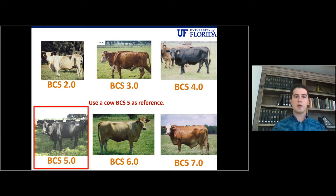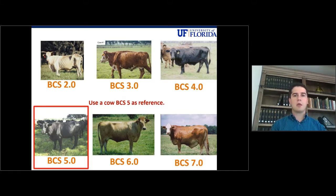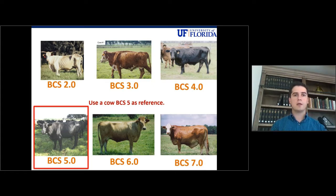For example, we know that a cow at body condition score 5: you don't see the ribs, but the tail head has some fat in it and it's not full yet. So if we move down the scale — a cow at body condition score 4 — you don't see the front ribs, but you will be able to see the last 2 to 3 ribs.